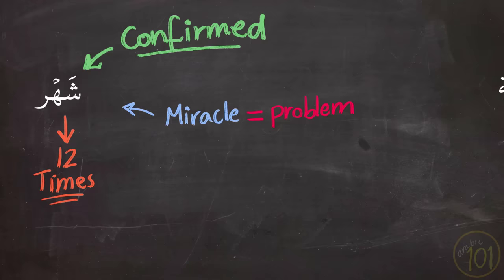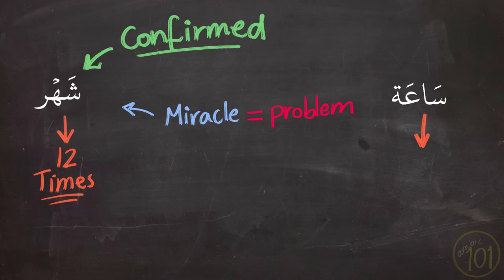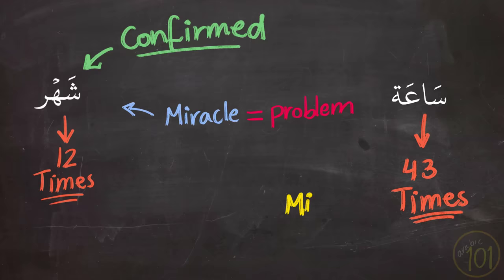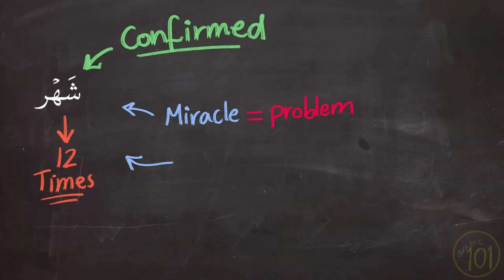Because the word sa'a, which means 'an hour,' was mentioned in the Quran 43 times, while it was supposed to be mentioned 24 times according to this logic. And let us consider the fact that anyone—and I mean anyone—can write a book and in it they can simply mention the word shahr 12 times and the word sa'a exactly 24 times, and so on.